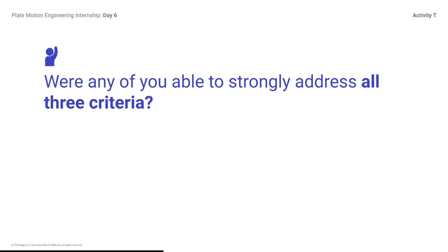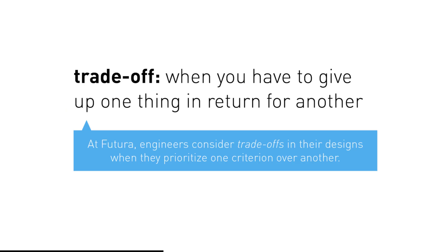Were any of you able to strongly address all three criteria? It is very hard to address all three criteria equally well, but it is important to try to improve your designs as much as possible for each criterion. Sometimes, to strongly address one criterion, you have to give up how well you address another — these are trade-offs, and you probably experience these trade-off decisions in your daily lives. Trade-off: when you have to give up one thing in return for another. At Futura, engineers consider trade-offs in their designs when they prioritize one criterion over another. A trade-off happens when a design has good results in one criterion but not in another.